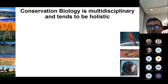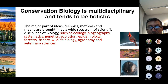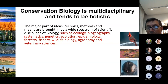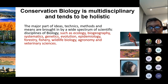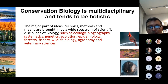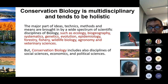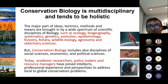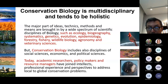Conservation biology is multidisciplinary and tends to be holistic. Ideas, techniques, methods, and means are brought in by a wide spectrum of scientific disciplines including ecology, biogeography, systematics, genetics, evolution, epidemiology, forestry, fishery, wildlife biology, agronomy, and veterinary sciences. Conservation biology also includes disciplines of social sciences, economics, and political sciences. Today, academic researchers, policymakers, and resource managers have joined intellects, professional experience, and perspectives to address local and global conservation problems.